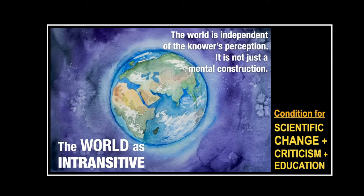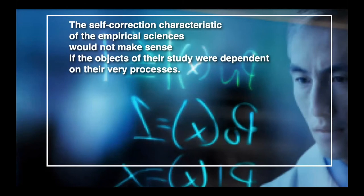Some may say that's obvious, but if you go through the history of philosophy, it wasn't always so. The point Roy makes is that the world being intransitive — being independent of the knower's perception — makes it possible for scientific change, scientific development, scientific criticism, and scientific education. If the world were merely a mental construction, there would be no sense in scientific change; everyone would just come up with their own world. There's nothing to criticize and no need for education.